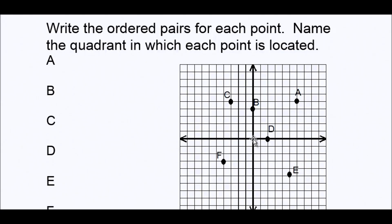Let's start with point A. We start at the origin, and A is to the right. First we go left or right starting from the origin, and because A is to the right, we go right — one, two, three, four, five, six. So our first coordinate will be six. Right and left is your x coordinate. Then we moved up — one, two, three, four, five. So the coordinates are (6, 5). Point A is in quadrant one, and we know that in quadrant one both numbers are positive.